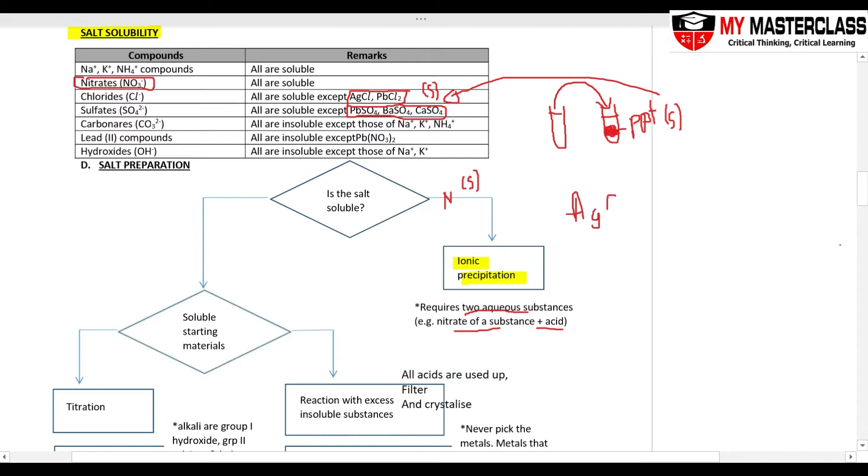So in an example to prepare AgCl, pick the aqueous silver nitrate plus HCl. When we write your equation: your silver, keep the H, plus partner the Cl, you get silver chloride, and this is the salt solid I mentioned that we see, and the H partners the nitrate to get HNO3.